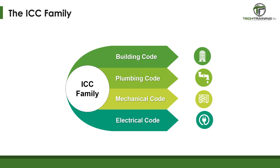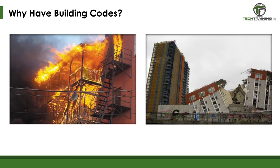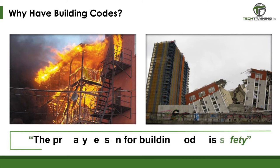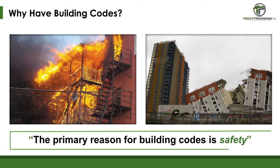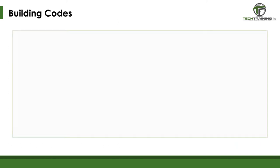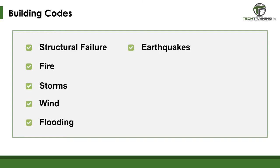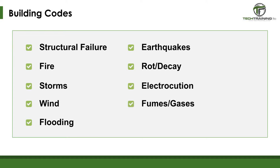Why do we need building codes? The purposes of the rules and regulations in the building code focus entirely on health and safety. Building codes intend to provide, at a minimum, the health, safety, and comfort of the individuals who occupy the buildings. Code addresses many hazards, such as structural failure, fire, storms, wind damage, flooding, earthquakes, rot and decay, electrocution, dangerous fumes and gases, drinking water contamination, and much more.